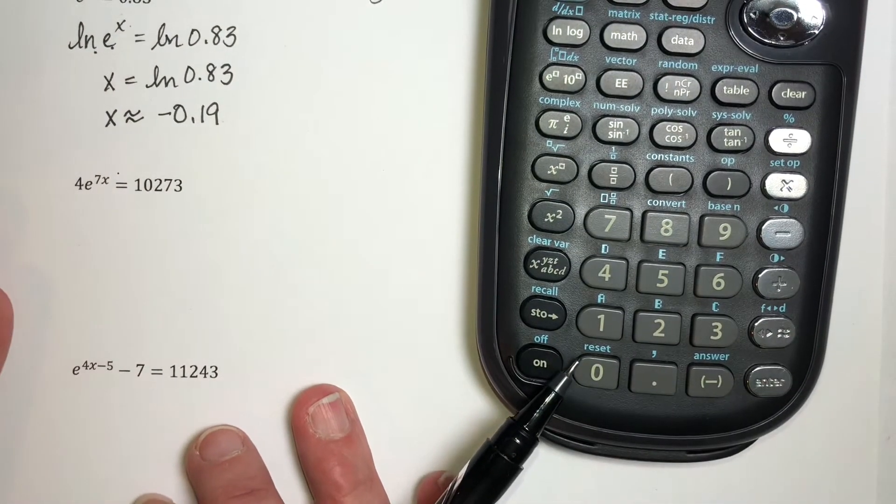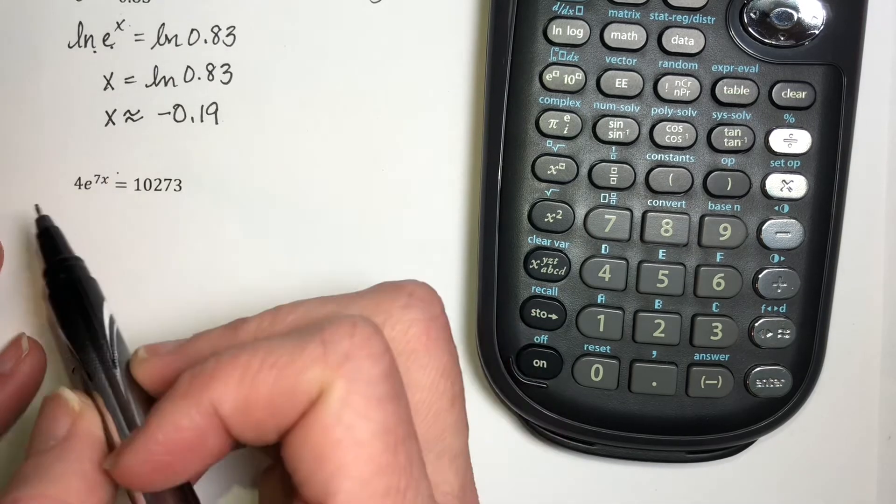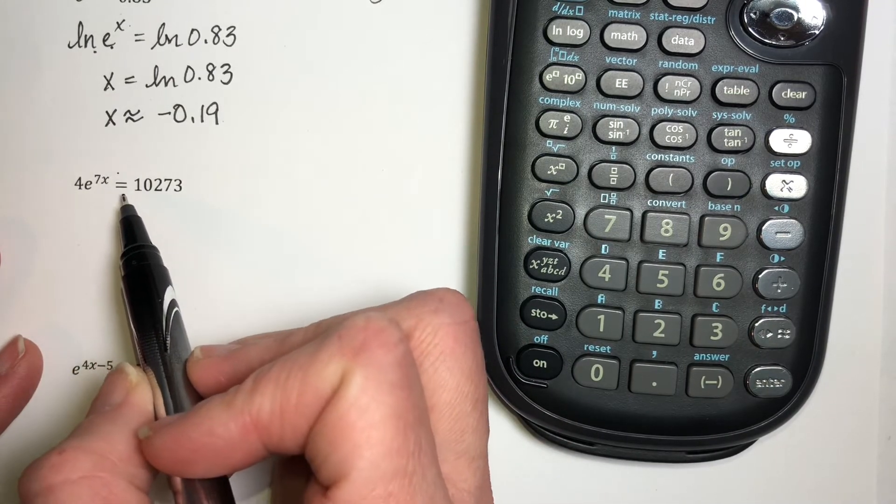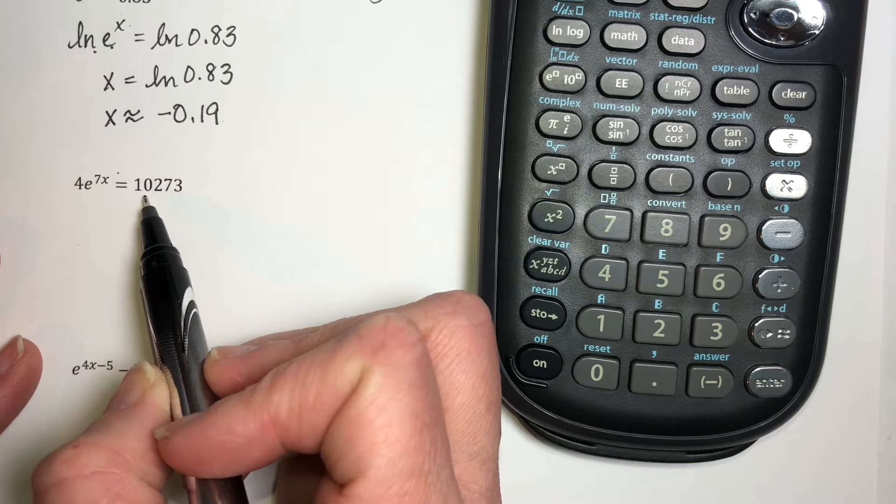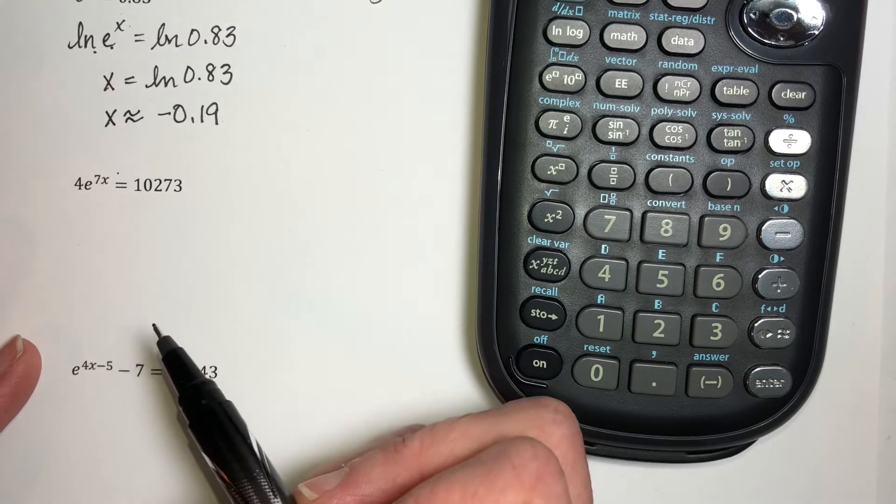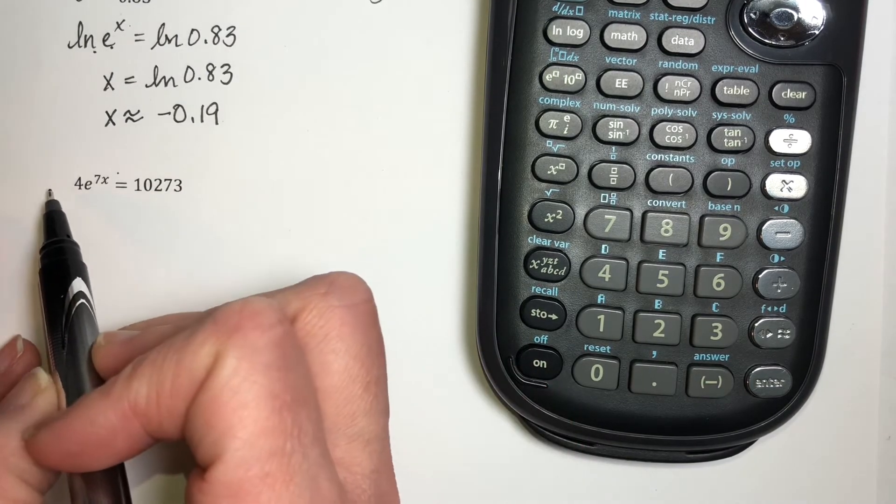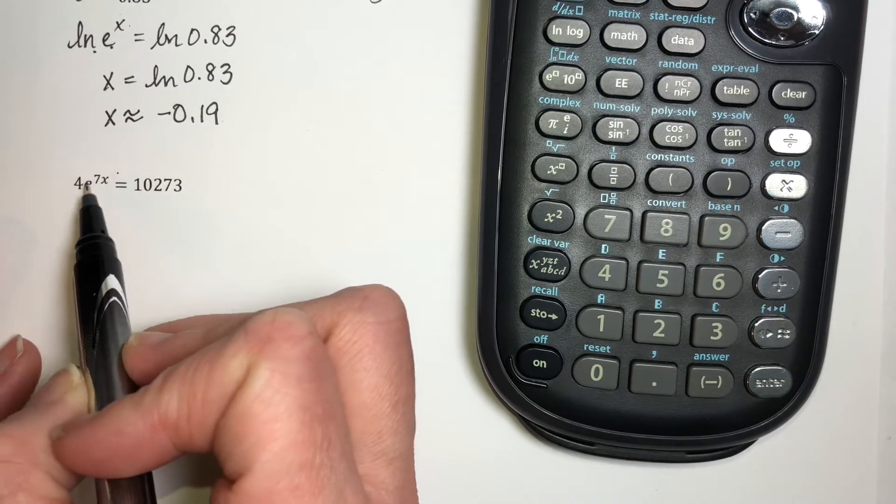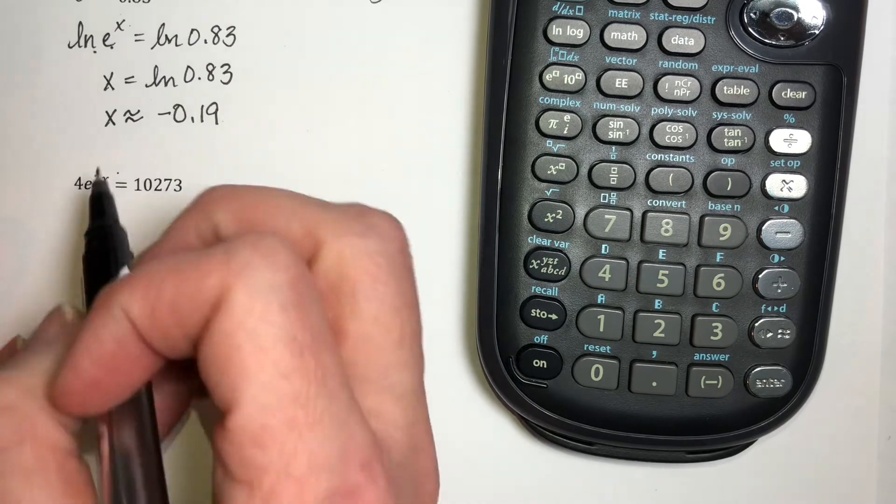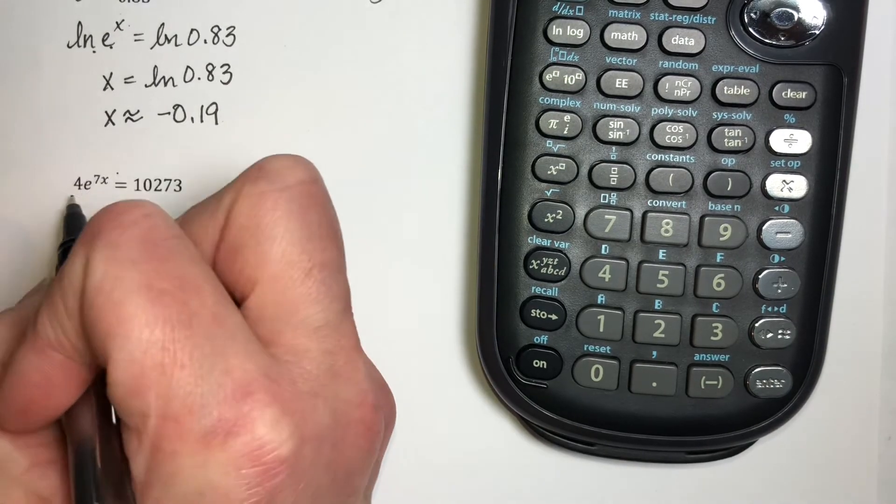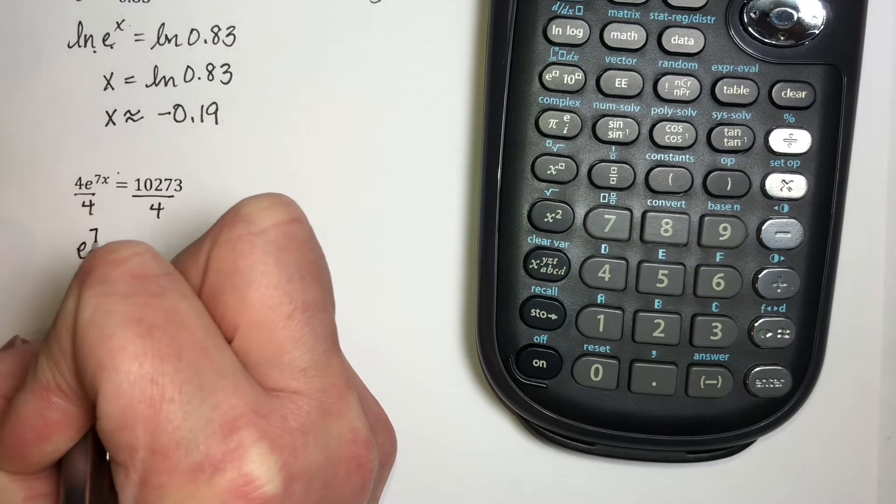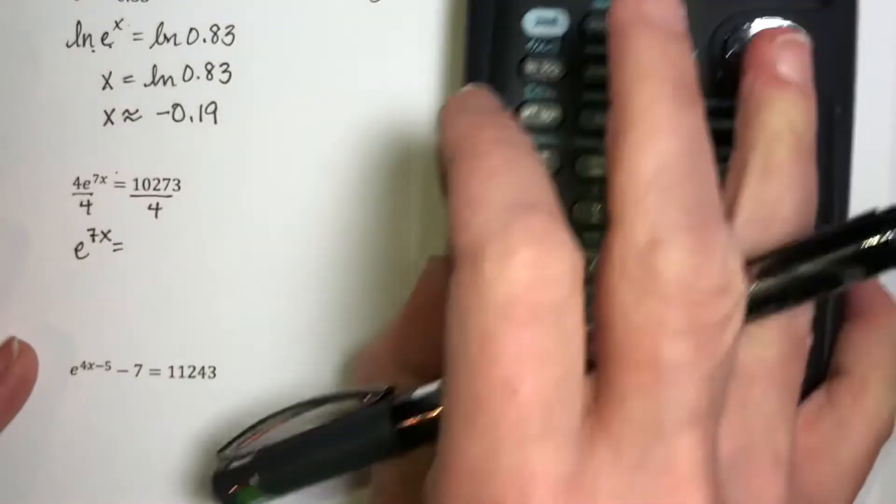Let's try this one. I have 4e^(7x) = 10273. I could go ahead and take natural log of both sides, but I really don't want to do that because it's not going to help with this 4. I want to get the e by itself, so I'm going to divide both sides by 4.